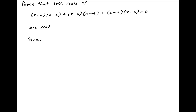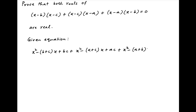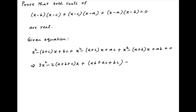The given equation can be written as x squared minus (b plus c) times x plus bc, plus x squared minus (a plus c) times x plus ac, plus x squared minus (a plus b) times x plus ab equals 0. Therefore, 3x squared minus 2 times (a plus b plus c) times x plus ab plus ac plus bc equals 0.